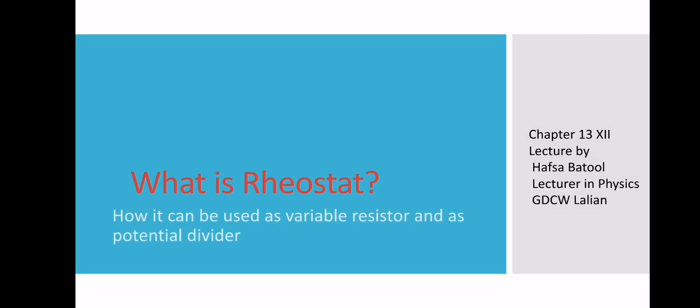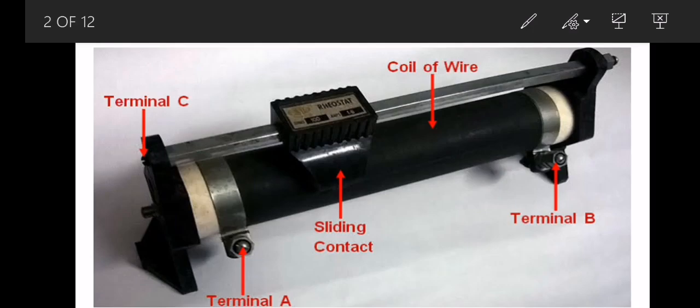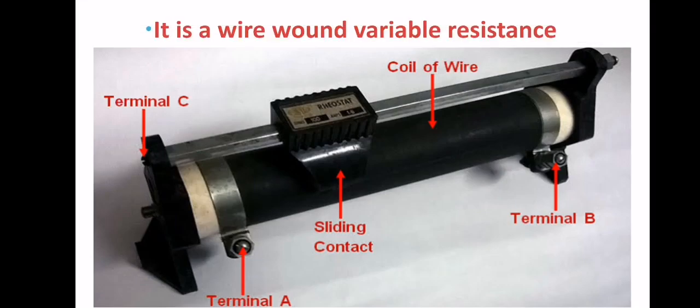Bismillahirrahmanirrahim, Assalamualaikum dear students. Today I am going to discuss with you about the rheostat. A rheostat is basically a resistor — it can be used as a variable resistor and it can be used as a potential divider. A rheostat is a wire wound variable resistance.